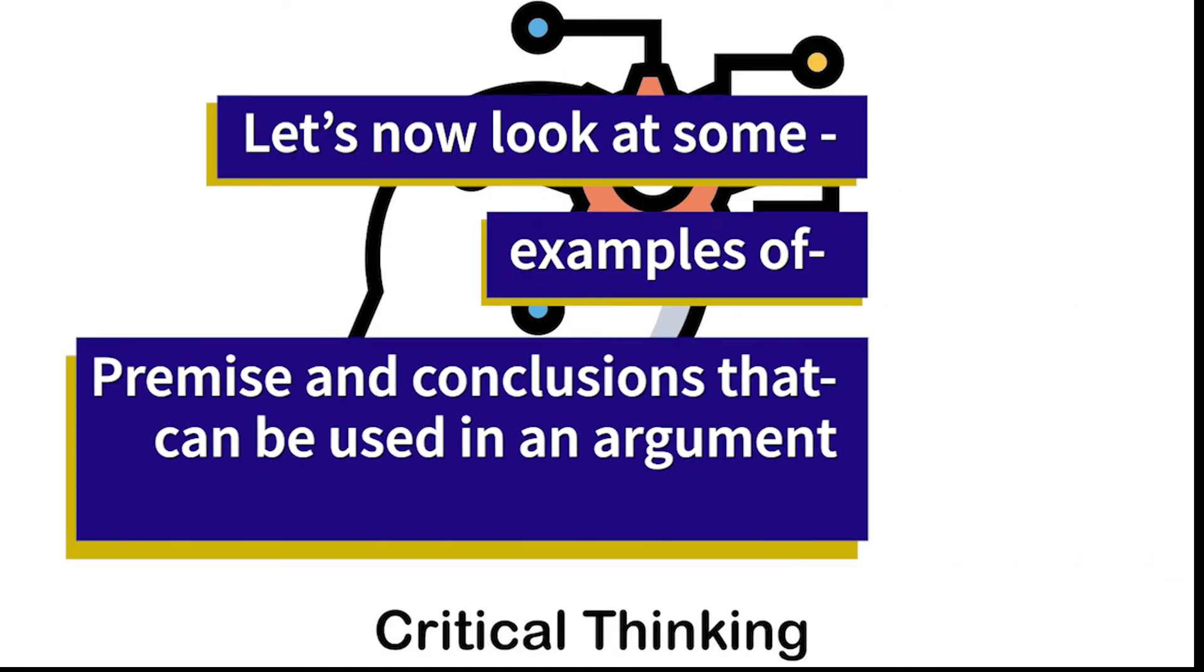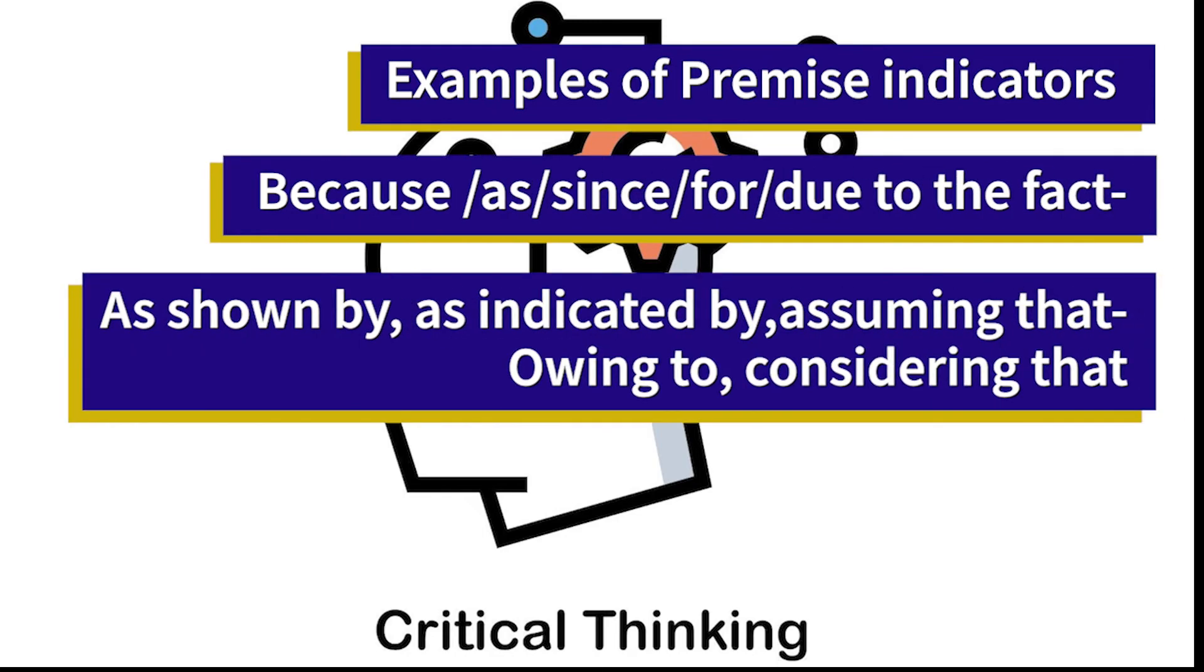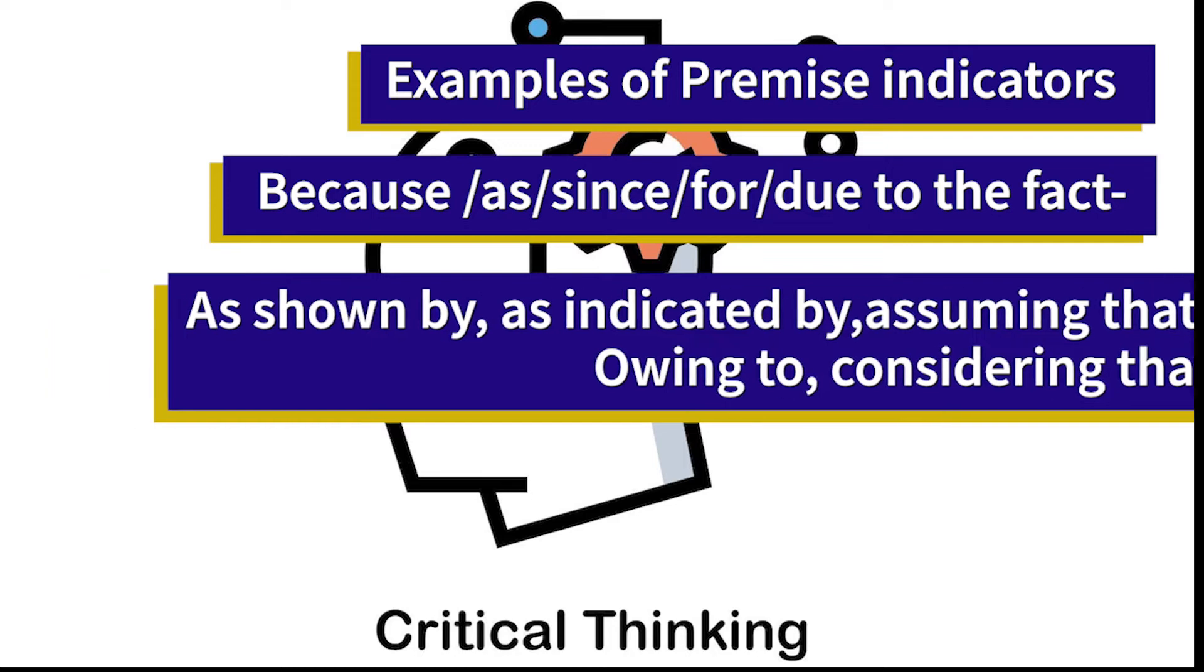Let's look at some examples then, of premise and conclusions that can be used typically in an argument. So let's take a look then. Examples of premise indicators can include because, as, since, for, due to the fact, as shown by, as indicated by, assuming that, owing to, and considering that. So these are all your examples that you can use as a premise indicator. So some good examples there for you to consider.